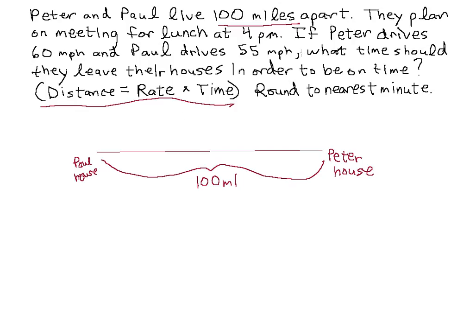So we want to know what time do they need to start leaving if Peter starts driving in this direction at 60 miles an hour, and Paul starts driving in this direction at 55 miles an hour. We're given these two pieces of information and we want to know what time they need to leave in order to be on time for a four o'clock lunch, somewhere in the middle. Probably Peter's going to be a little further away, and Paul's going to be a little closer because Peter's driving faster.